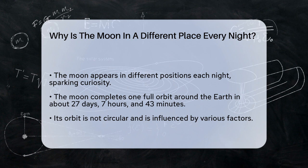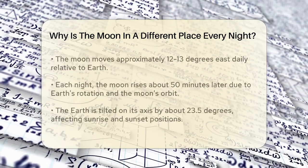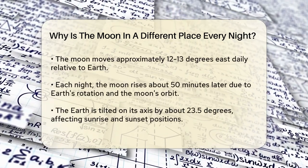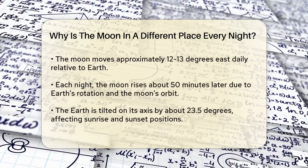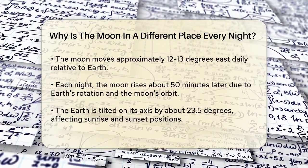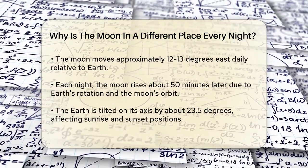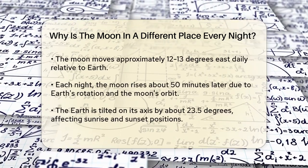One key reason the Moon appears in different places is due to its daily movement. The Moon moves about 12 to 13 degrees east every day relative to the Earth. This means that each night, the Moon rises about 50 minutes later than the previous night because of the Earth's rotation and the Moon's orbit around the Earth.